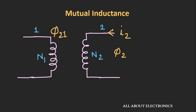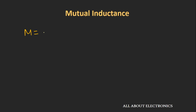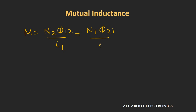Similarly, if current is flowing in coil 2 and voltage is generated in coil 1, then the mutual inductance M can be given as M = N1 × φ21 / i2, where φ21 is the flux linked to coil 1 due to current in coil 2. So mutual inductance M = N2 × φ12 / i1 = N1 × φ21 / i2. The coupling between the two coils defines how well the flux links to the other coil.